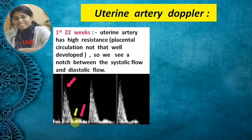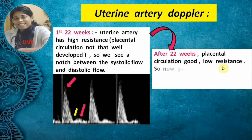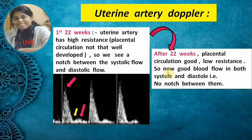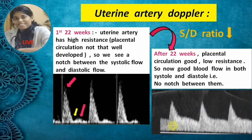After 22 weeks of gestation, placental circulation becomes good and low resistance due to various chemical mediators released. Now there is good flow in both systole and diastole — no notch between the systolic and diastolic flow. The systole-to-diastole ratio should decrease as gestational age increases. Appreciate the good systolic as well as good diastolic flow with no notch.